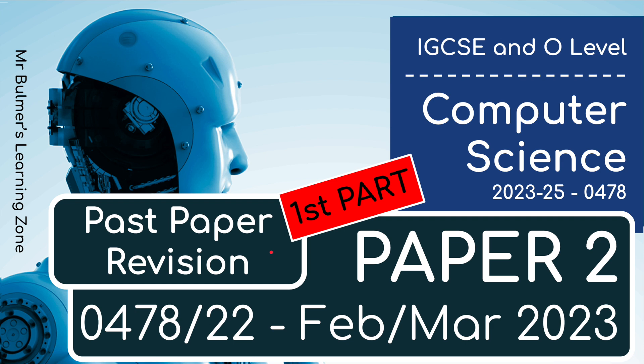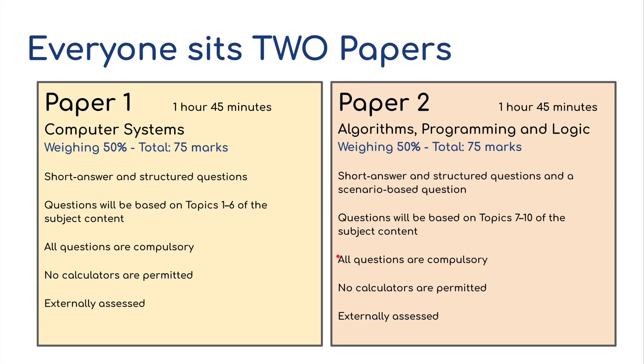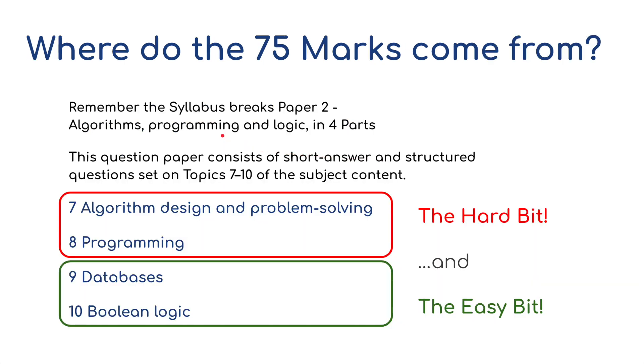Welcome back. We have some more revision, this time Paper 2. It's a past paper from the February-March 2023 Paper 2 exam for Computer Science. This is Part 1. I'll go through some of the questions. We've got Paper 1, Paper 2, and they are both weighted at 50%, both worth 75 marks.